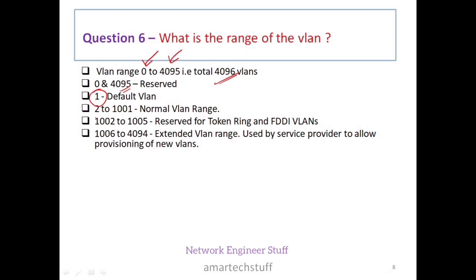From VLAN 2 to VLAN 1001, this is the normal range — the usable VLAN range. From VLAN 1002 to 1005, these are reserved for Token Ring and FDDI VLANs. From VLAN 1006 to 4094, this is the extended VLAN range.